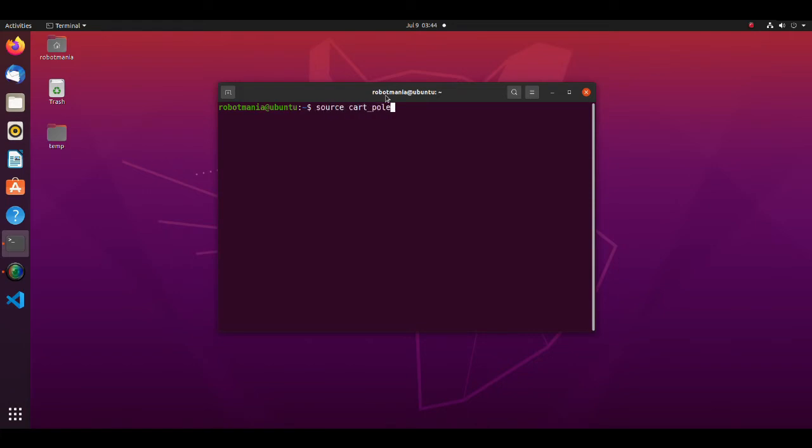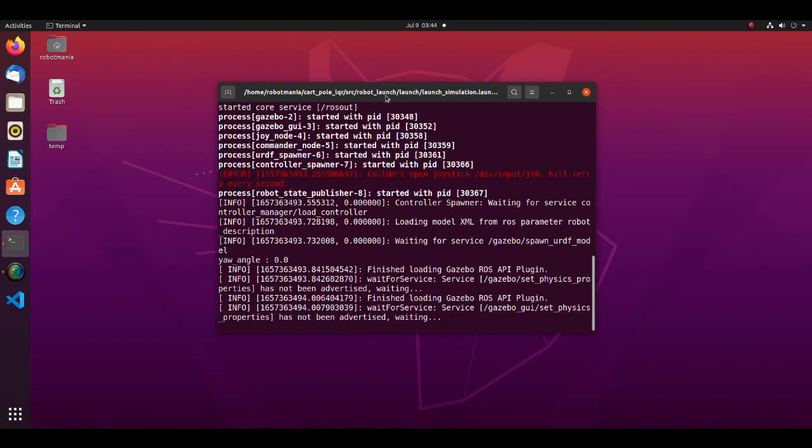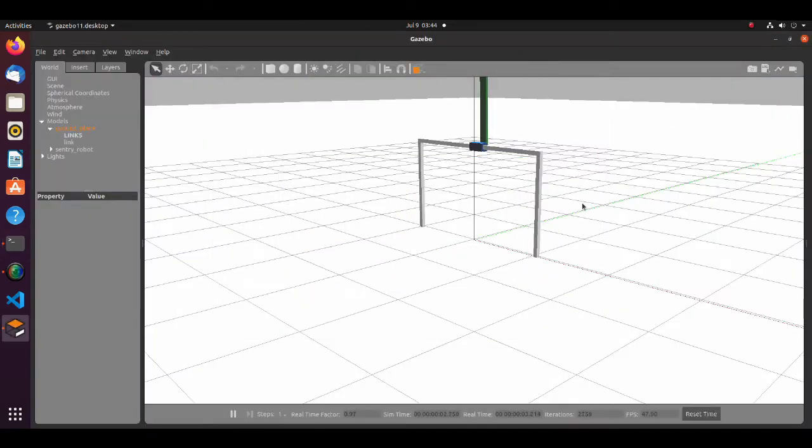To run the simulation, download the CartPole LQR zip file from the Google Drive and execute the launch simulation file.